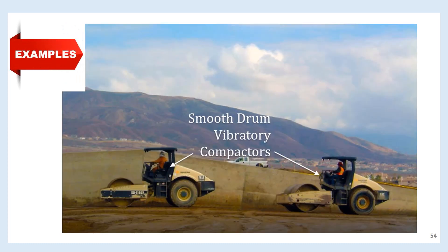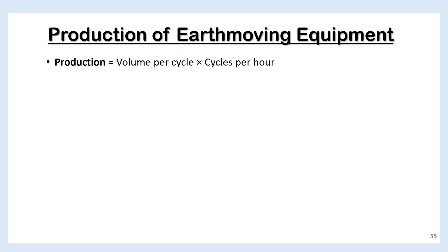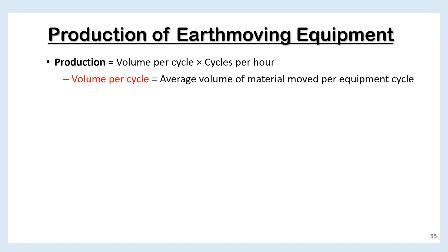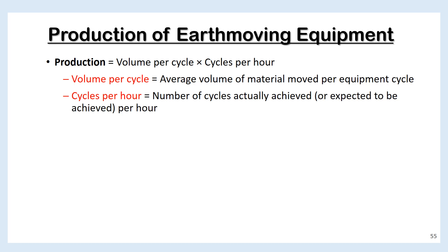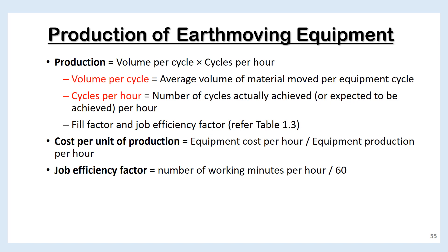Situation 7: Here you see two smooth drum vibratory compactors working in tandem to complete a lift. Production of earth moving equipment: The formula for production is volume per cycle times cycles per hour. Volume per cycle is the average volume of material moved per equipment cycle. Cycles per hour is the number of cycles actually achieved per hour. Fill factor and job efficiency factor — refer to Table 1.3. The formula for cost per unit of production equals equipment cost per hour divided by equipment production per hour. Job efficiency factor equals the number of working minutes per hour divided by 60.